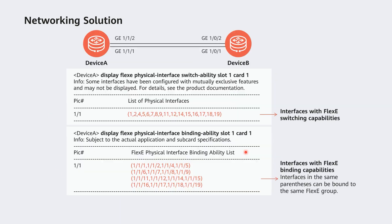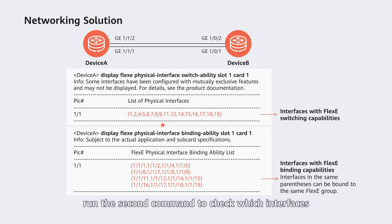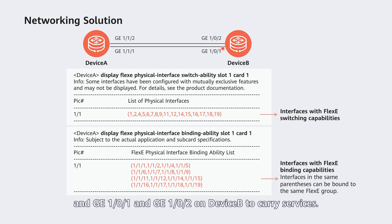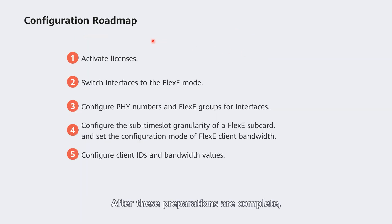Now query the interfaces that support flexi capabilities on the devices using two commands. In the command output, view the interfaces that support flexi switching. If multiple physical interfaces need to be bound together, run the second command to check which interfaces can be bound to the same flexi group. In this example, GE 1/1/1 and GE 1/1/2 are used on device A, and GE 1/0/1 and GE 1/0/2 on device B to carry services.